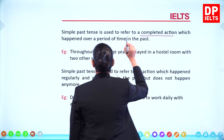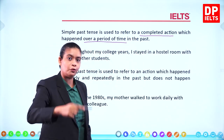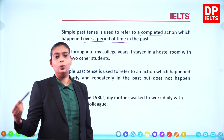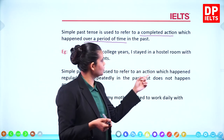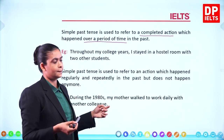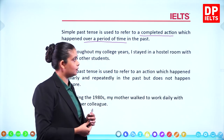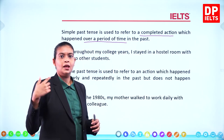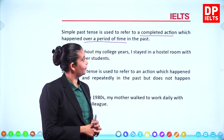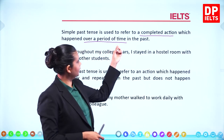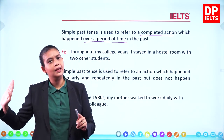The second use: the simple past tense is used to refer to a completed action which happened over a period of time in the past. Example: 'Throughout my college years, I stayed in a hostel room with two other students.' Did it happen just once? No, it happened over and over again, and the action is now completed.